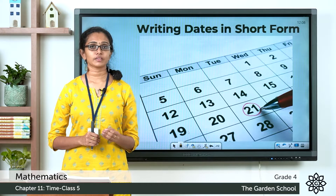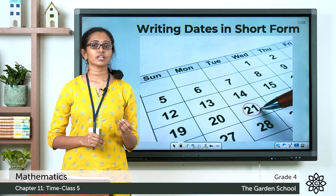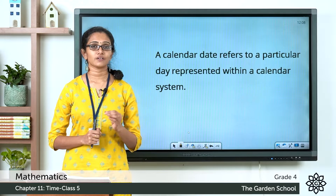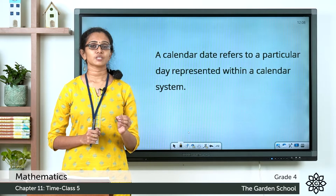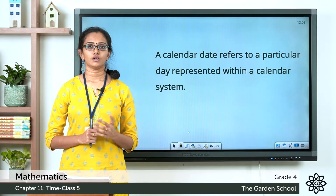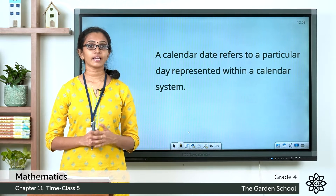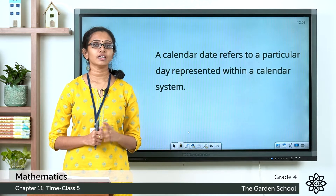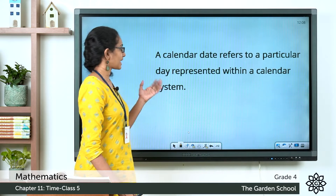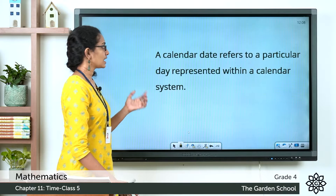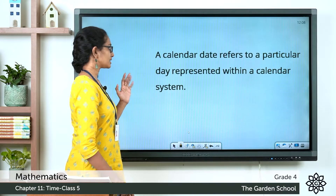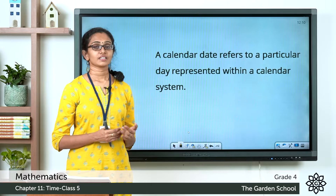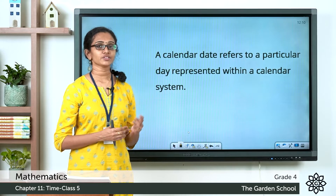A calendar date is something that refers to a particular day in a calendar system. It refers to a specific day in a year, or you can say it is a designation given to a specific day in a year. So a calendar date refers to a particular day represented within a calendar system.